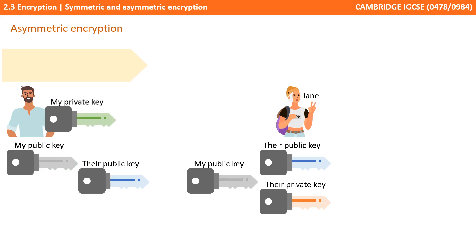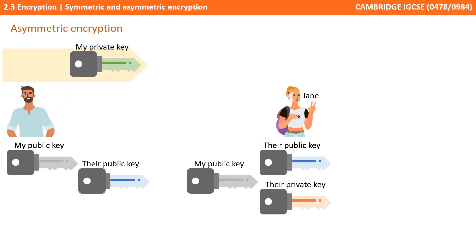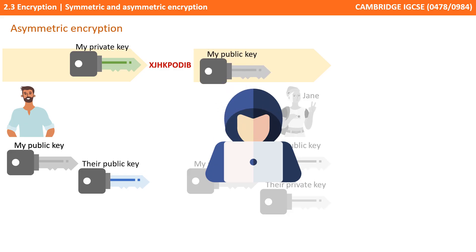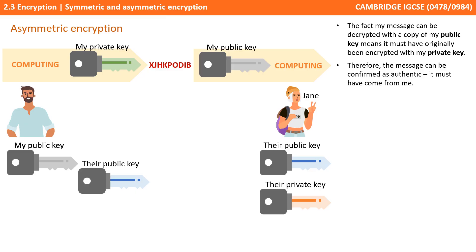Now there's another huge advantage to this public-private key system. I could choose to encrypt my message with my private key and then send it out. You might be thinking, why on earth would I want to do that? We've already said anyone can access my public key, so presumably anyone can decrypt my message. This seems a little backwards. However, the fact that my message can be decrypted with a copy of my public key means it must have originally been encrypted with my private key. This means the message can be confirmed — it can be seen as authentic. It must have originated from me and not somebody else.